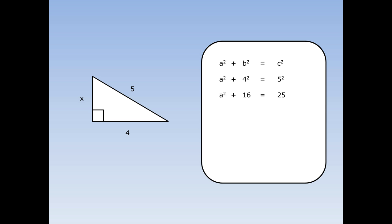Now I've got A squared plus 16 equals 25, but really I want to get A squared by itself. So I'm going to take away 16 from both sides. The A squared is still there; 16 take away 16 leaves nothing, and I've got 25 minus 16 on the other side. 25 minus 16 equals 9, so A squared equals 9. But I don't really want to know what A squared is — I want to know what A is. So I'm going to square root both sides. The square root of A squared is A, and the square root of 9 is 3. So the missing side x equals 3.